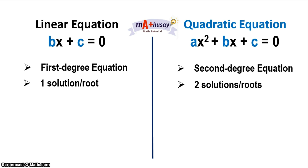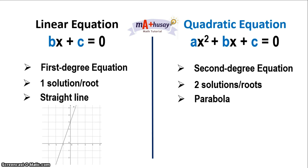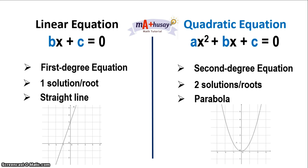When we talk about linear equation in two variables, the graph of a linear equation is a straight line. On the other hand, the graph of a quadratic equation is like a U shape. Now that we know the difference between linear equation and quadratic equation, let's take a look at examples of quadratic equations.